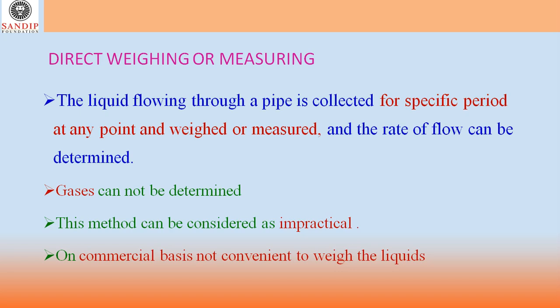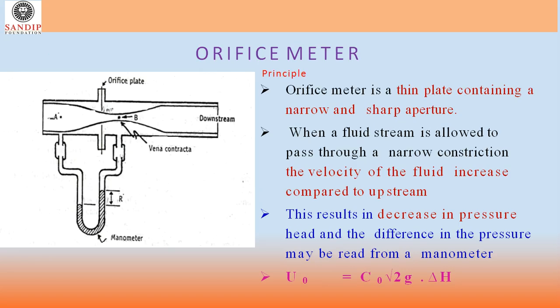In the direct weighing or measuring method, fluid flowing through a pipe is collected for a specific period at any point, then weighed or measured, and the rate of flow is determined. However, gases cannot be measured by this method, and on a commercial basis it is not convenient to weigh the liquid, making this method impractical.